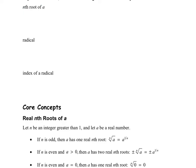It turns out that you can extend the concept of a square root to other types of roots. We're used to seeing, for example, the square root of 16 equals 4, because 4 squared equals 16. There's an invisible 2 here, which means that you're multiplying a number twice — in this case 4 times 4 — in order to get 16. Usually you don't see the 2 for a square root.